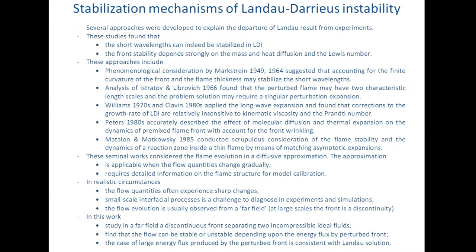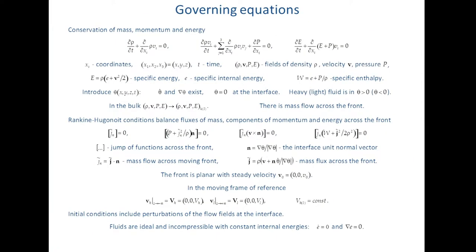However, as a rule, the idea is that the complex transports of the temperature and mass at the interface, as well as various diffusive mechanisms, may potentially stabilize the front, and if the front is thin, then it is stable. In our work, we consider the two incompressible ideal fluids — so in a sense it is a model mathematical problem — but we justify it with the use of a far-field approximation. We are not staying in the vicinity of the interface; we look at it from the far field.